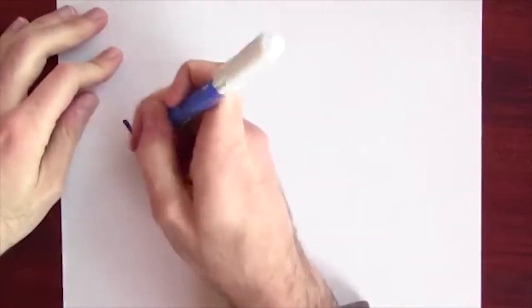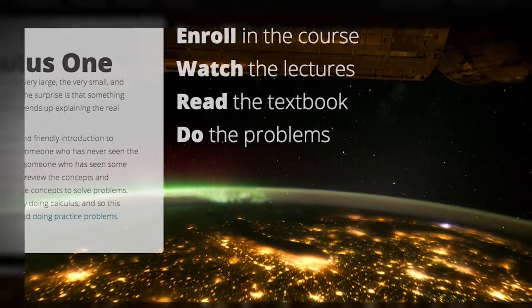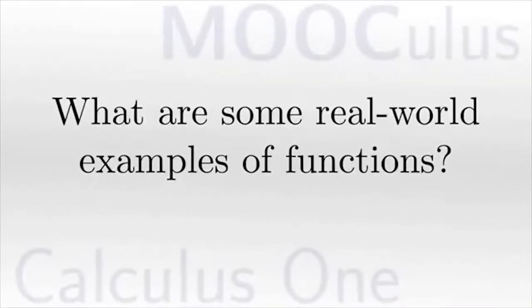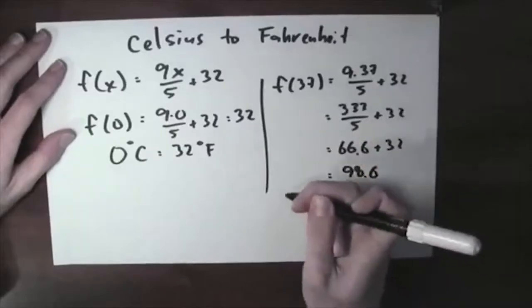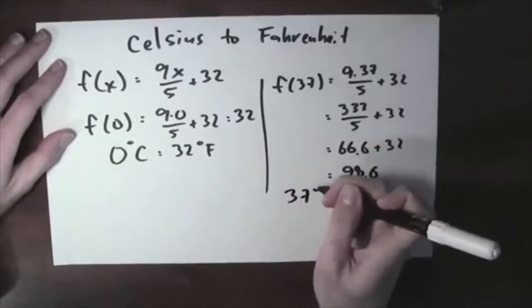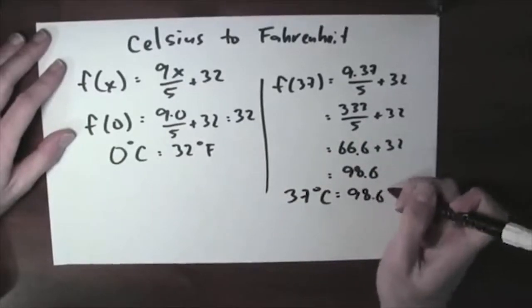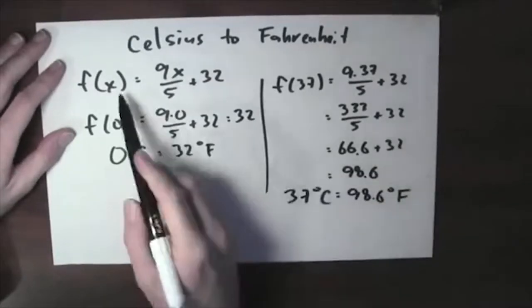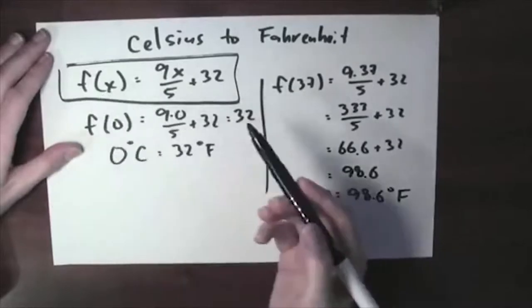His questions have been answered over four million times. His courses are some of the most popular on Coursera. Thousands of Ohio State students have used his online materials. And indeed, 37 degrees Celsius is the same thing as 98.6 degrees Fahrenheit. But how did Professor Jim Fowler get started? What led to the rise of Muculus?